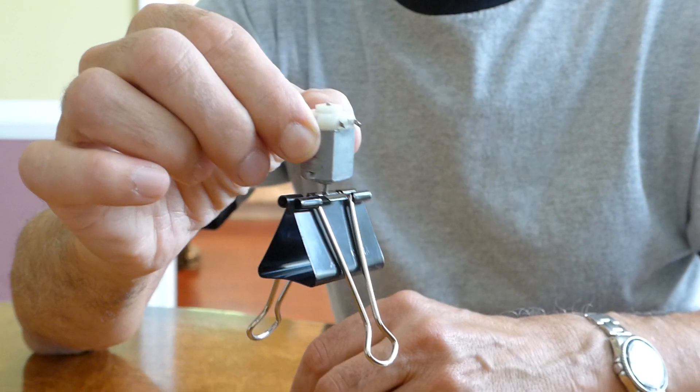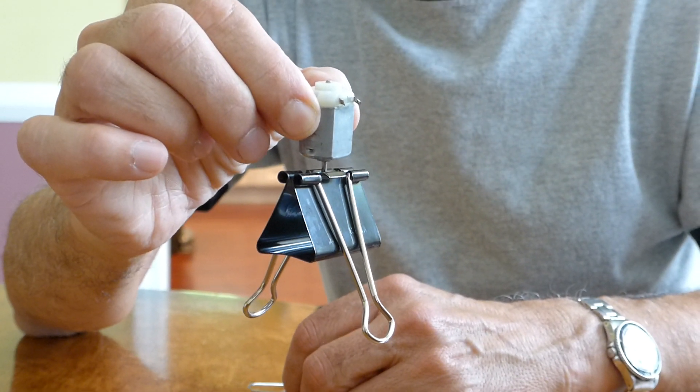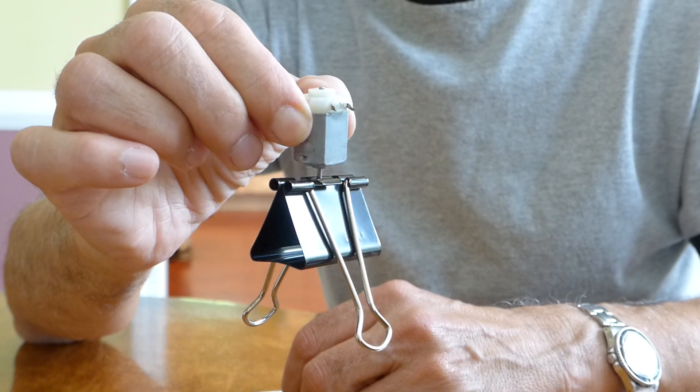The reason the MOVA globe turns from west to east, same as the earth does, is because the inventor will set it up to do that.